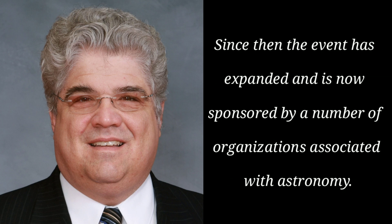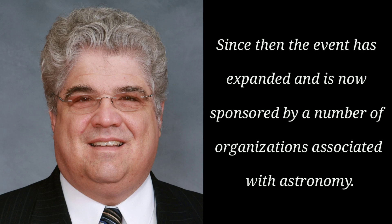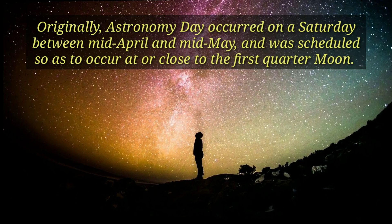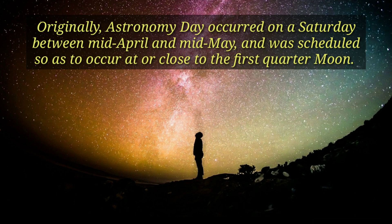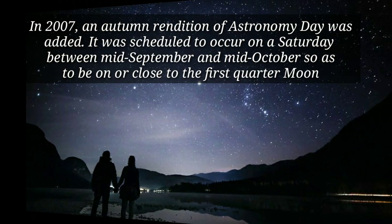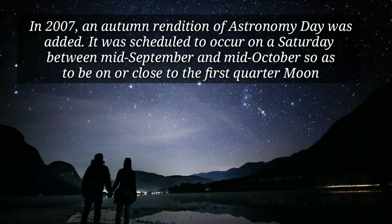Since then, the event has expanded and is now sponsored by a number of organizations associated with astronomy. Originally, Astronomy Day occurred only on a Saturday between mid-April and mid-May, and was scheduled so as to occur at or close to the first quarter moon. In 2007, an autumn edition of Astronomy Day was added.